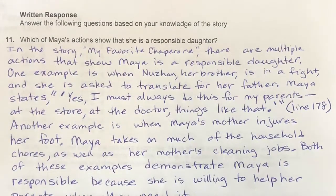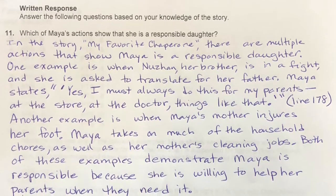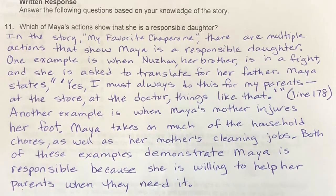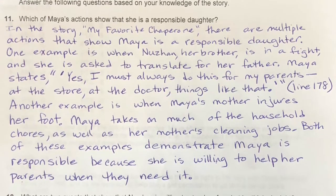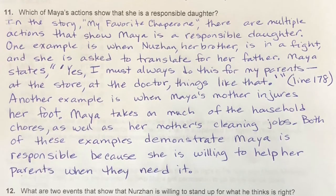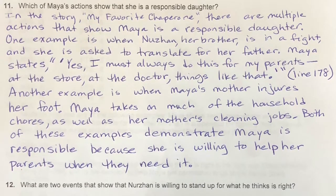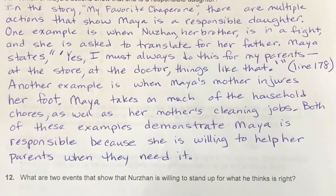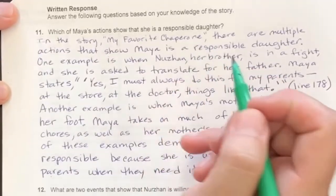Let's read this all together: In the story My Favorite Chaperone, there are multiple actions that show Maya is a responsible daughter. One example is when Nershon, her brother, is in a fight and she is asked to translate for her father. Maya states, 'Yes, I must always do this for my parents, at the store, at the doctor, things like that,' line 178. Another example is when Maya's mother injures her foot. Maya takes on much of the household chores as well as her mother's cleaning jobs. Both of these examples demonstrate Maya is a responsible daughter because she is willing to help her parents when they need it.